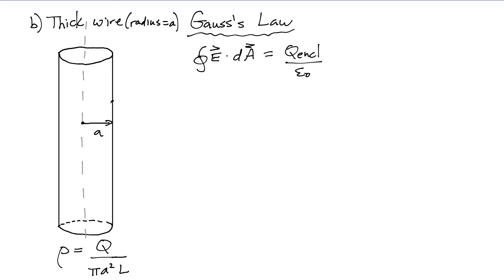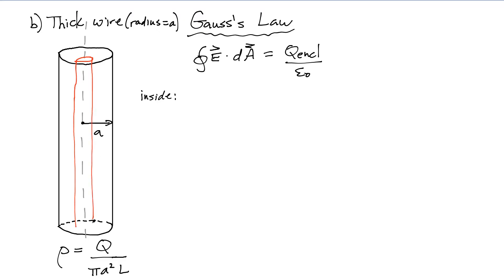Now I want to look at the thick wire which has a radius a. It's also going to have a uniform charge density rho — that's the charge per unit volume of the cylinder. Since we're looking at an object with a finite size, we're going to look at the inside of the wire and the outside separately. For the inside, you want to draw a Gaussian surface that has the same symmetry as your object — simply another cylinder that is inside our wire. This smaller cylinder is going to have a radius r and has the same length as the wire. We don't have to worry about the top and bottom — there is no electric flux going through there.